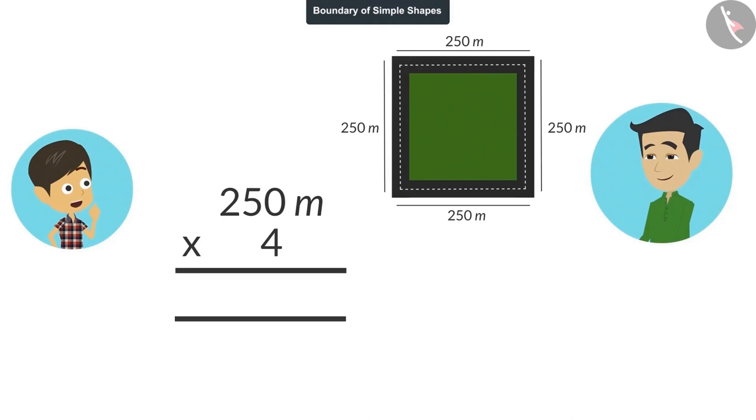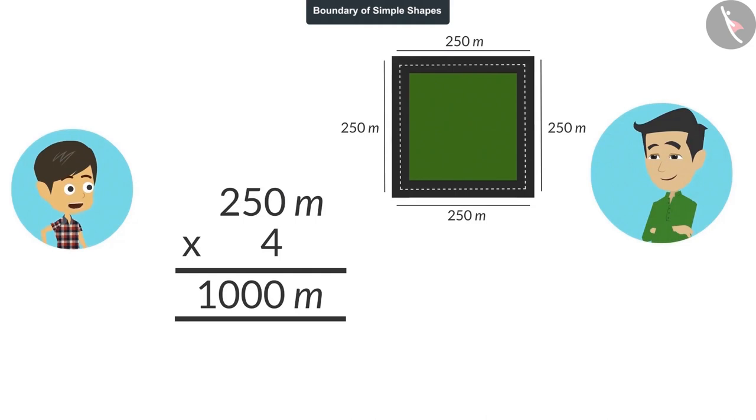Oh yes, I didn't think of that. Now we can find the length of this boundary by multiplying the length of an edge by 4. So tell me, what is the length of the boundary? 250 multiplied by 4 will be 1000. That means the length of this boundary is 1000 meters.